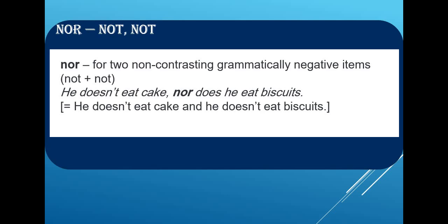NOR is used when both sentences are negative. Both the first and the second parts are always negative. Example: 'He doesn't eat cake, nor does he eat biscuits.' This means he doesn't eat cake AND he doesn't eat biscuits. Another example: 'I didn't wake up early, nor did I take my classes.' So with NOR, both parts of the sentence must have NOT — both sentences are negative.